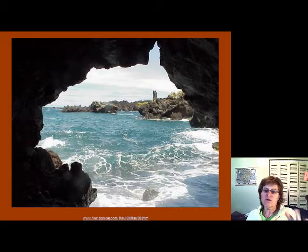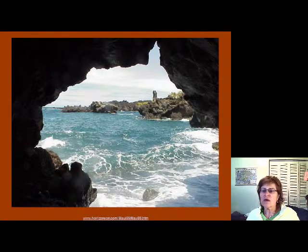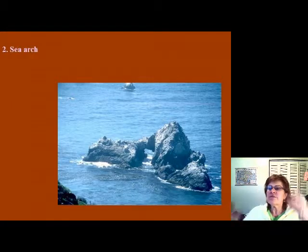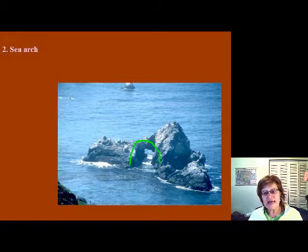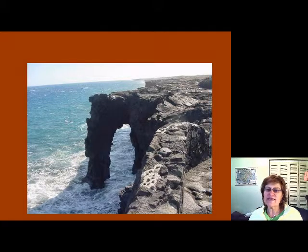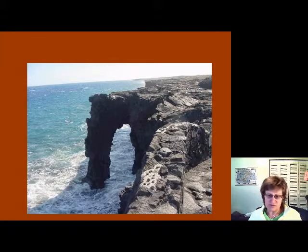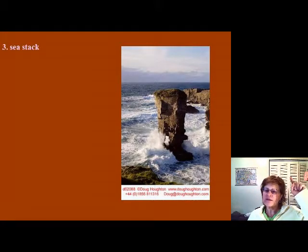Wave pressure is very high on both the Mediterranean Sea and the Oregon/Washington coast. After a while, the caves are going to collapse and you end up with a sea arch. Here is a beautiful sea arch — I believe it's in Iceland because of the black basalt, which makes it easy to identify.